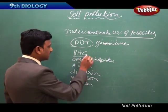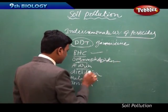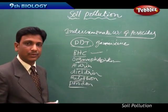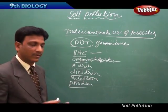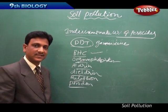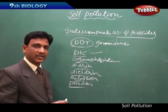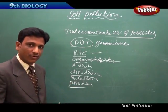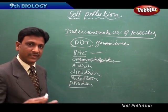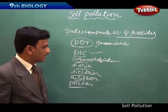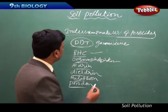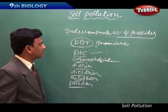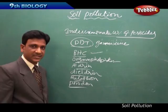In our country, we are still using so many pesticides and insecticides - BHC, Organophosphates, Aldrin, Dieldrin, Malathion, Furodon. All these chemical pesticides pollute the soil and cause adverse effects to living organisms, as they slowly enter into other animals and finally to human beings also. This is one of the causes for soil pollution - the indiscriminate use of pesticides.